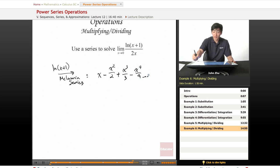So from previous examples we know this and we can go ahead and divide by 2x because multiplication and division apply directly to series. So x over 2x minus x over 4, well x over 2x is simply 1 over 2 minus x over 4 plus x squared over 6 minus x cubed over 8.